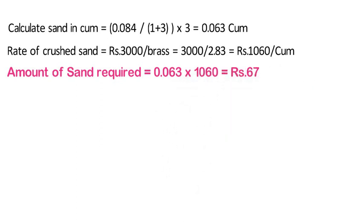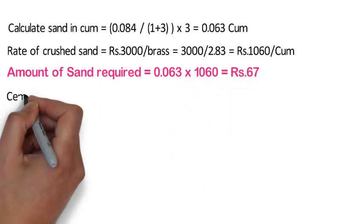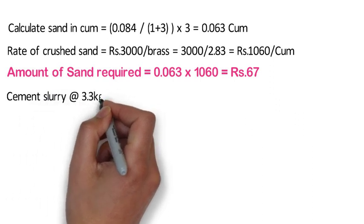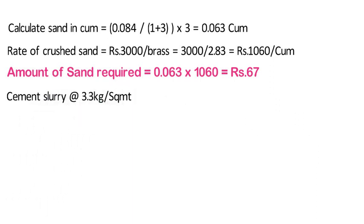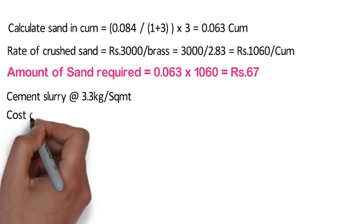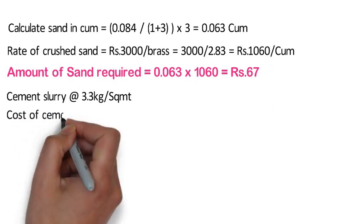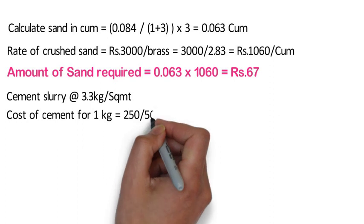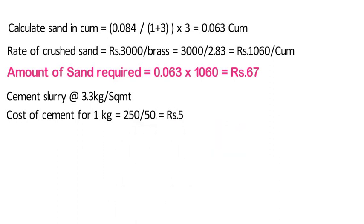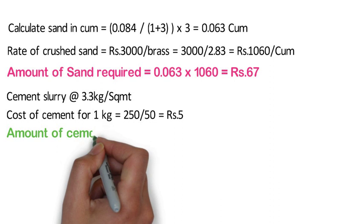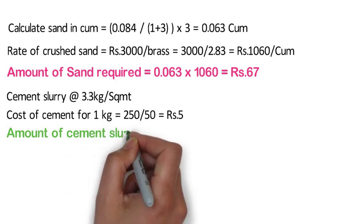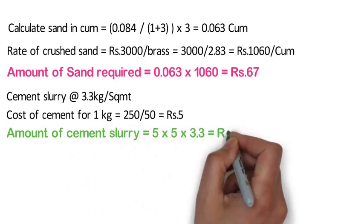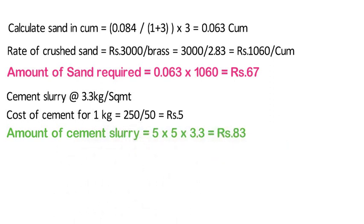After laying mortar, a cement slurry shall be required over the bed of mortar at the rate of 3.3 kg per square meter. The cost of cement for 1 kg is 250 divided by 50 = 5 rupees. Hence, for 5 square meters, the amount of cement slurry required shall be 5 x 5 x 3.3 = 83 rupees.